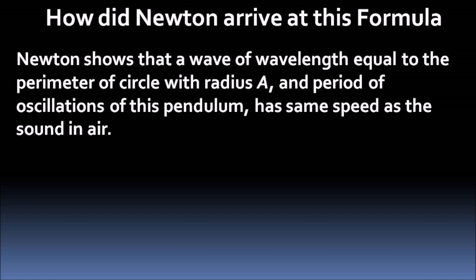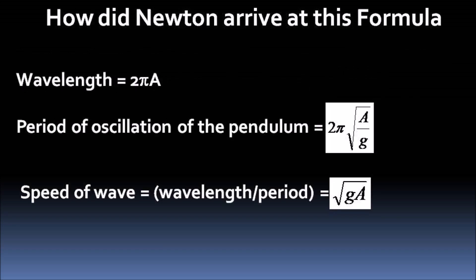Newton shows that a wave of wavelength equal to the perimeter of circle with radius A and having frequency of this pendulum has same speed as the speed of pressure pulse or sound in the column of air. The wavelength comes equal to 2 pi A. The period of oscillation is 2 pi under root A by G, where G is the acceleration due to gravity. Speed of wave equals wavelength divided by period of oscillation and it comes out to be root GA.